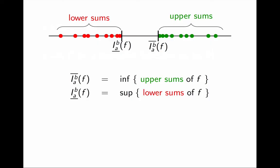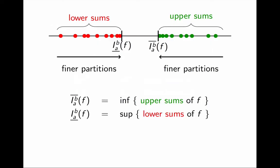In addition, we know that finer partitions produce better lower and upper sums. Finer partitions produce larger lower sums, which are closer to the lower integral. And finer partitions also produce smaller upper sums, which are closer to the upper integral. So far, this is what we knew.